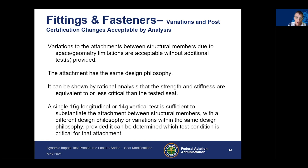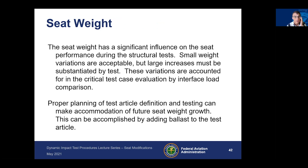A single longitudinal or vertical test is sufficient to substantiate attachment between structural members with a different design philosophy, or variations within the same design philosophy, provided it can be determined which test condition is critical for that attachment. If you can show that a removed attachment point has no effect, you don't have to conduct an additional test. However, if you change the fitting type — such as a different type of rivet or a different material — you may need to conduct an additional test.